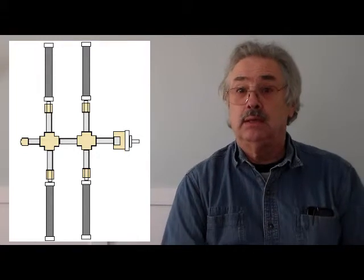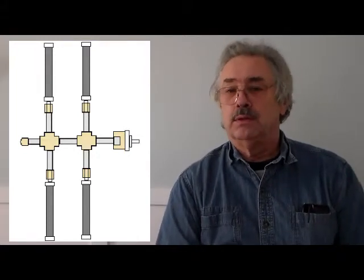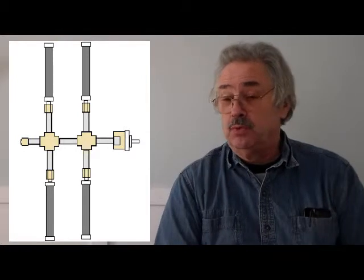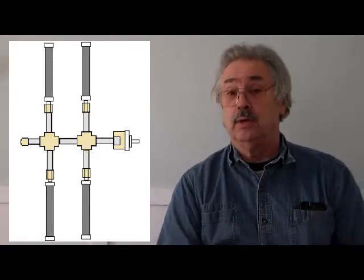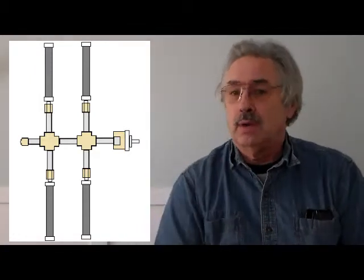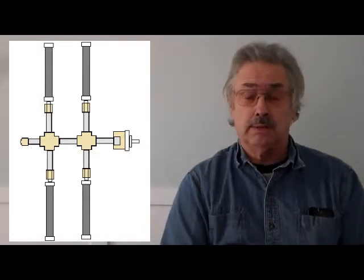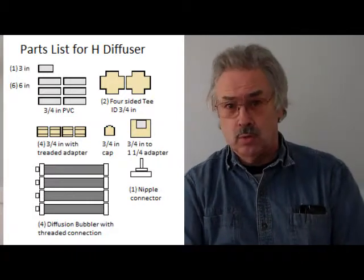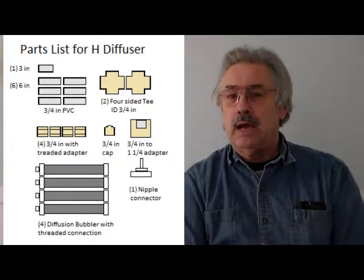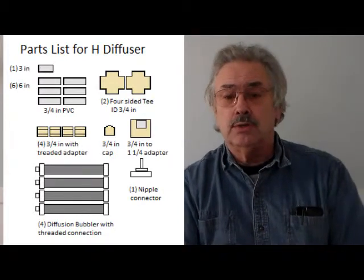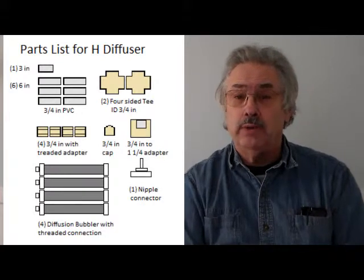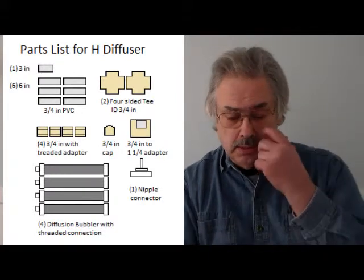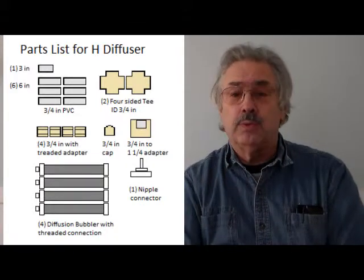Now we're going to look at how to make a diffusion bubbler. If you bought it online or from any pond source, it would cost approximately $200, maybe a little less. But you can do it for well under half that price. I like doing it because it allows me to see how this all works and how it all goes together. To my side you can see the diagram of all the items you need, so let's take a close look at the real items.